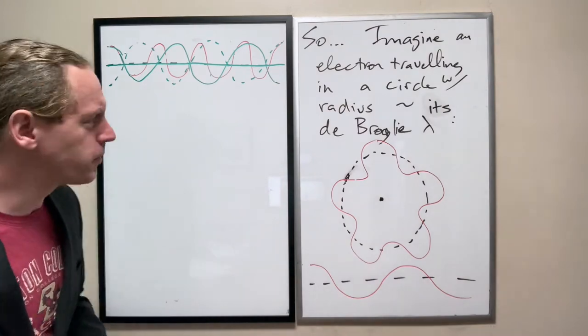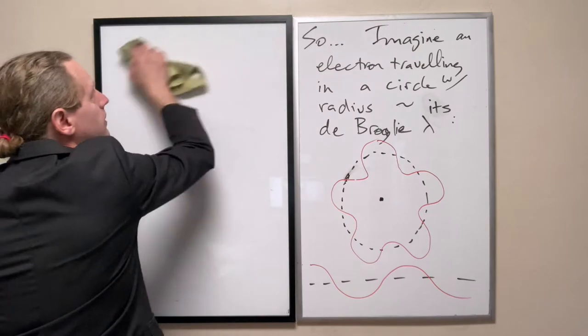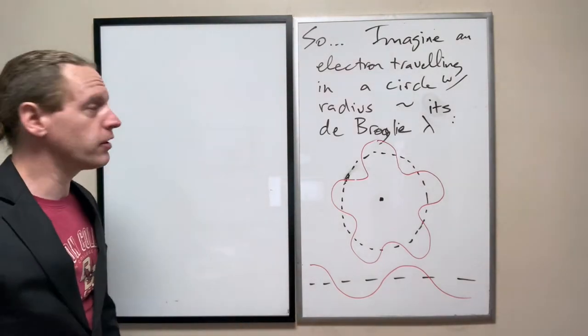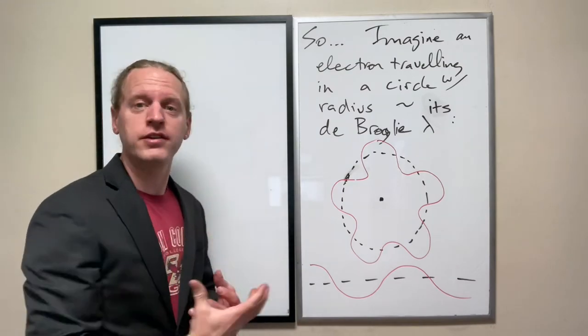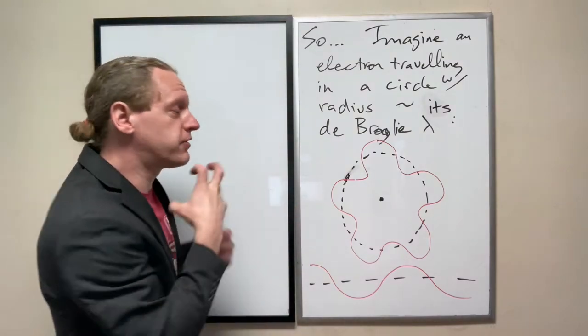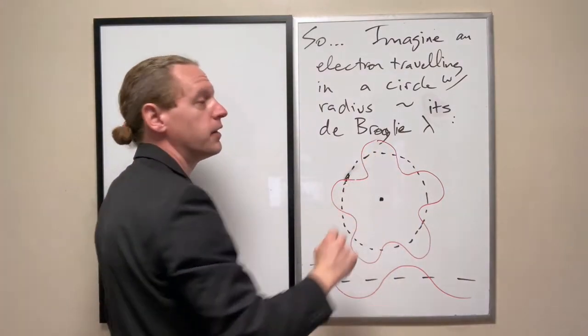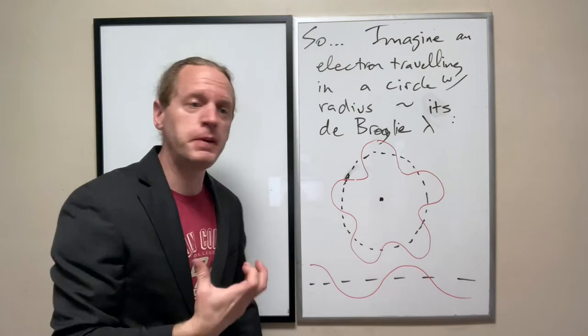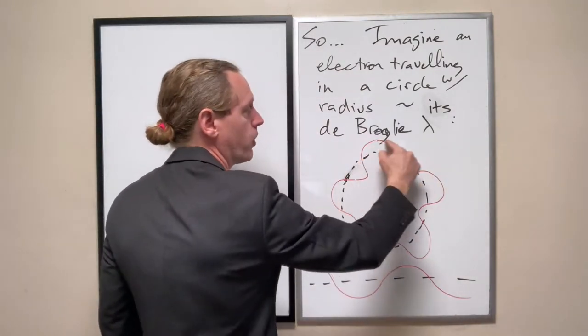I hope this makes sense, but basically what we're describing is the fact that if the phase of the electron cancels with itself, you can imagine certain specific circumferences where at a given speed the electron will always come back to a maximum where it started.